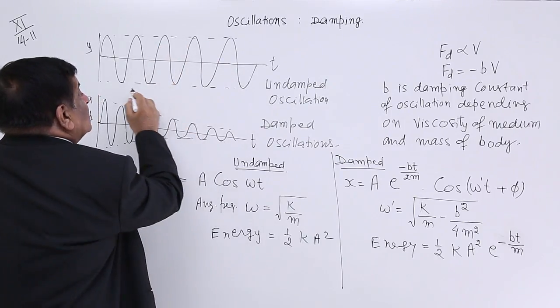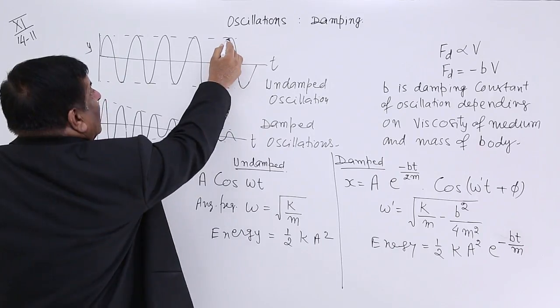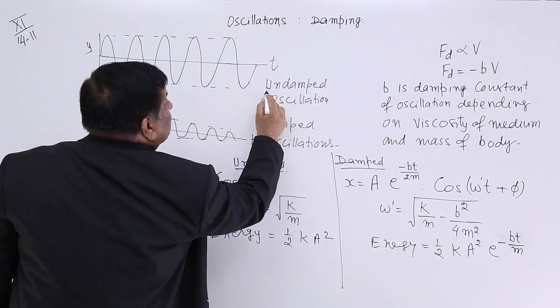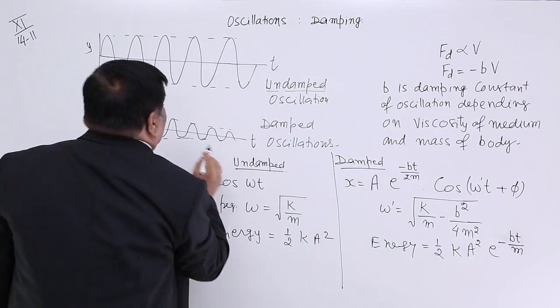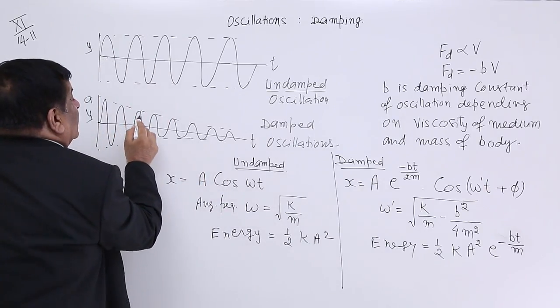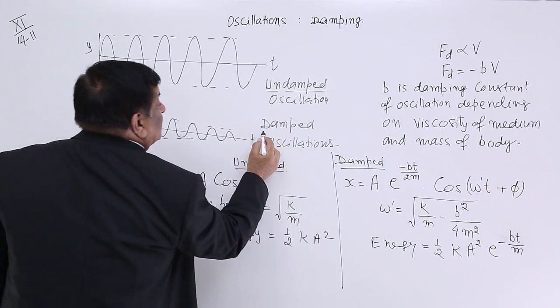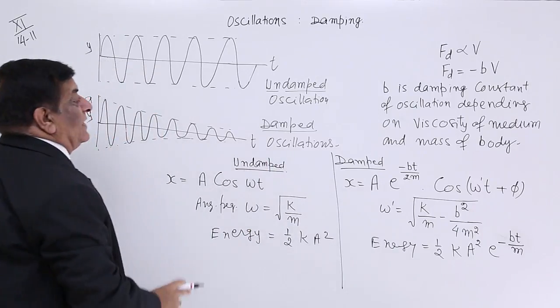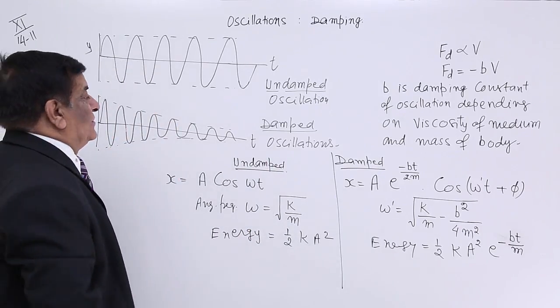Now, this type of oscillation, when the amplitude remains same, are known as undamped. And the one in which the amplitude goes on decreasing is known as damped.